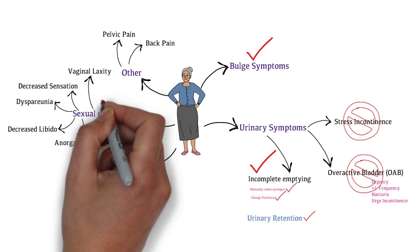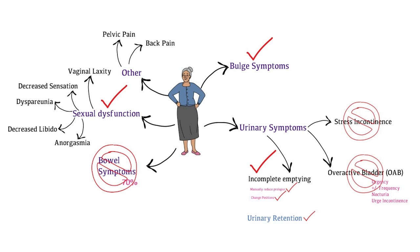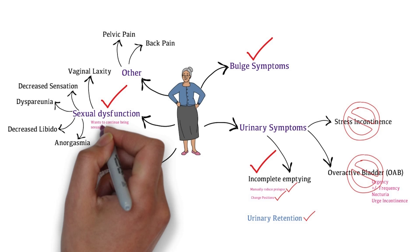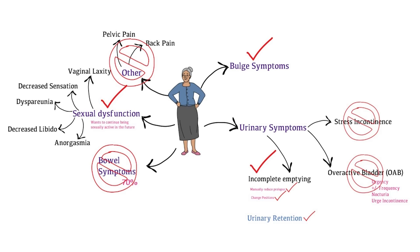She is sexually active but has been avoiding intercourse in the last 6 months. She states that the feeling of prolapse makes intercourse difficult. She would like to continue being sexually active in the future. She denies any pelvic pain or back pain.